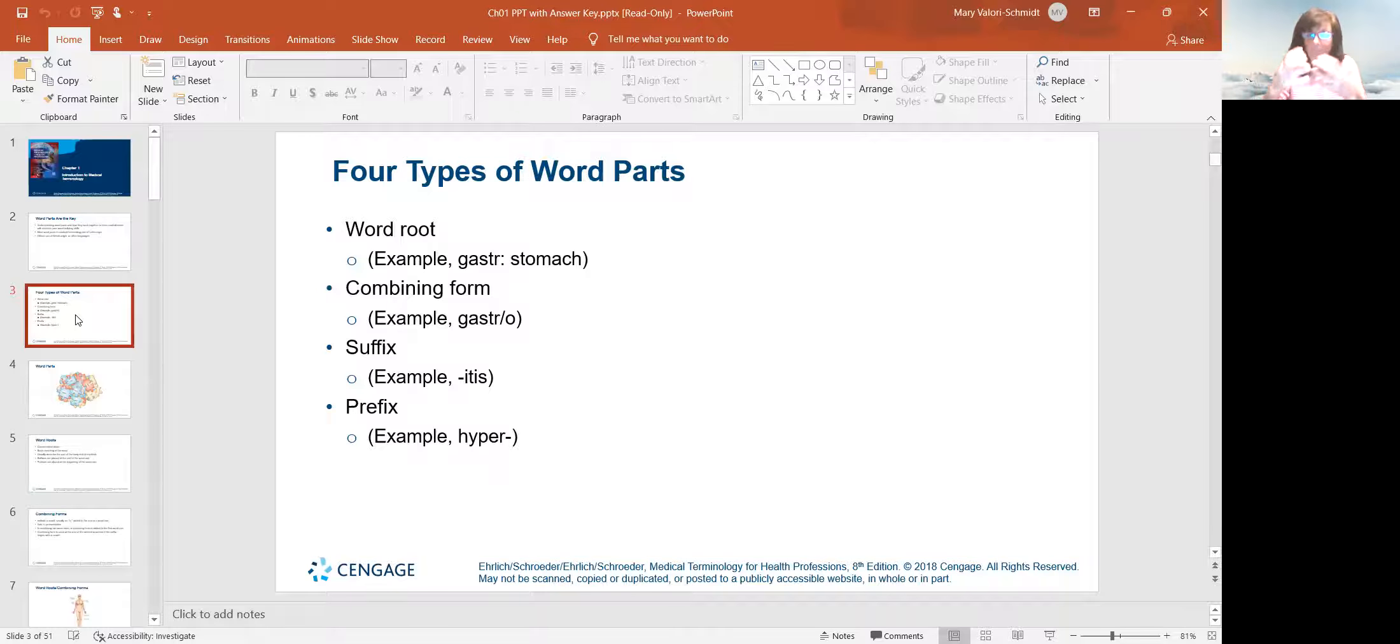Now we're talking about the stomach or something to do with the stomach. Then we can add a prefix or suffix to it to further explain what it is we're talking about. So if we say gastritis and we put that itis at the end, we're talking about an inflammation or irritation of the stomach. If we put hyper in front of any word root, it means overactive or too much of.